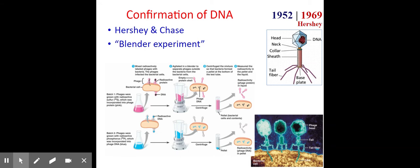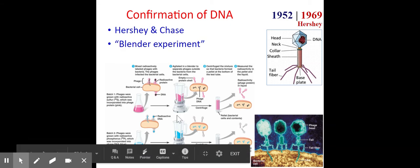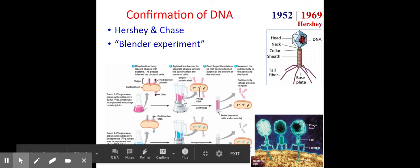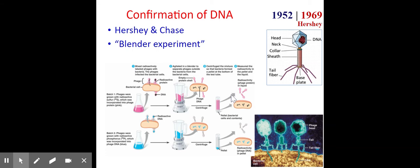It's called the blender experiment because they literally used a blender to separate particles in the mixture. They radioactively labeled bacteriophages, which are made of a protein coat on the outside and DNA inside — just two components. In the first treatment, they radioactively tagged the protein of the bacteriophage, allowed the bacteriophages to infect bacteria, then used a blender to separate the protein shells from the bacteria, and centrifuged the mixture.